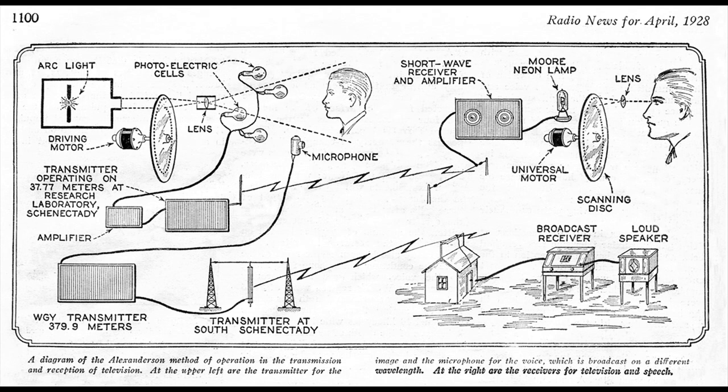The current in the cell varies in proportion to the light falling on it, and this varying current is transmitted to a receiver where it controls a light behind an optical arrangement similar to that at the sending end. By this means, a point of light is caused to traverse a ground glass screen. The light is dim at the shadows and bright at the highlights, and crosses the screen so rapidly that the whole image appears simultaneously to the eyes.